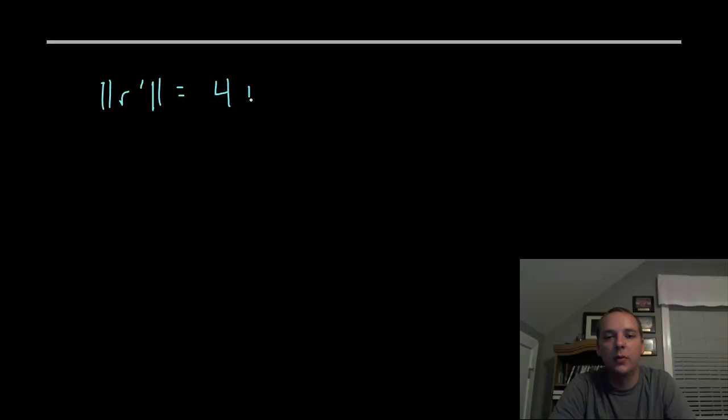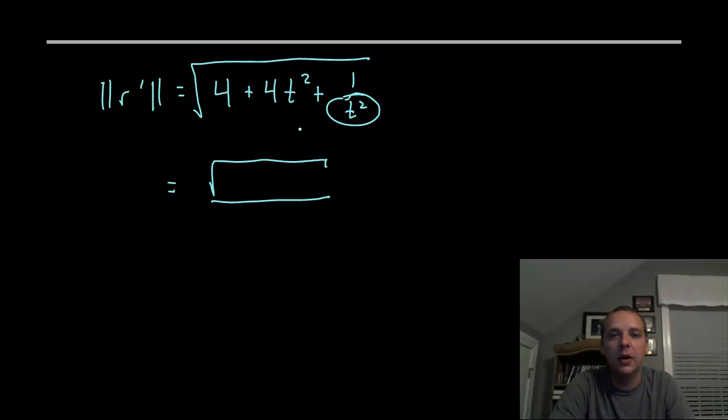Let's see, it looks like something similar is going to happen. Again get a common denominator of t squared, break it into 2 fractions. You have the square root of the numerator over the square root of t squared which is just t. In the numerator you will get 4t squared plus 4t to the fourth plus 1.